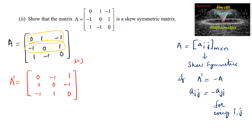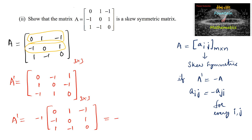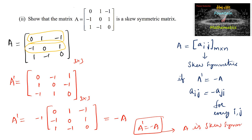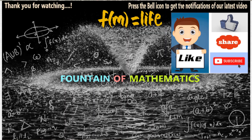Both orders are the same — 3 by 3. We can observe that if minus 1 is taken common from A transpose, we get 0, 1, negative 1, negative 1, 0, 1, 1, negative 1, 0, which is the given matrix A. So A transpose equals negative A. Therefore, as per the definition, the given matrix A is skew-symmetric. Thank you.